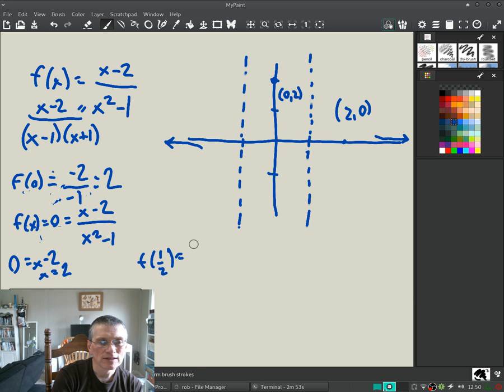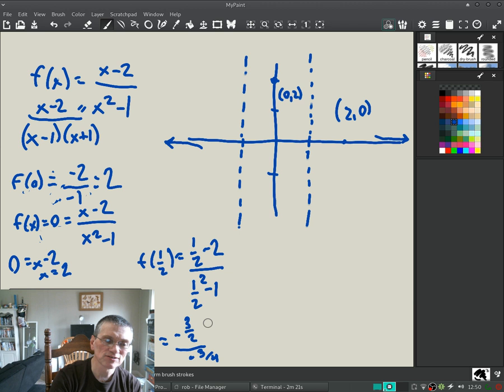f(1/2) or 0.5 is going to be 1/2 - 2 over (1/2)² - 1. All right. So 2 is 4 halves, so this is -3/2 on the top. And (1/2)² is 1/4. 1/4 - 1 is -3/4. I'm running out of space down here. -3/2 over -3/4. Minus signs cancel. Let's flip and multiply: 3/2 times 4/3. I see the 3's cancel out. 4 over 2, which equals 2. So f(1/2) equals 2. Interesting.